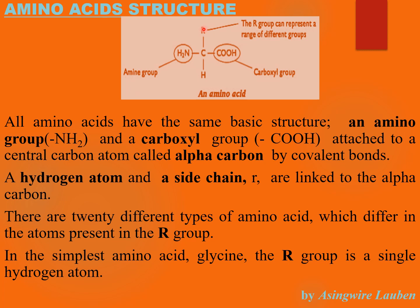On the alpha carbon is also attached the R group, which represents different groups such as hydrogen and others as we shall see in our next lesson, and a hydrogen atom. On the other side we have the carboxyl group, which is COOH. That is the structure of an amino acid — the building block of all the proteins in our body. Proteins differ because of the different amino acids that make them.